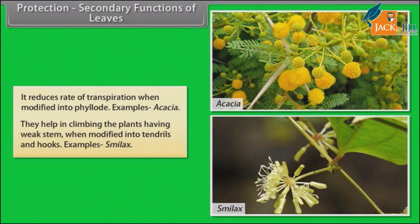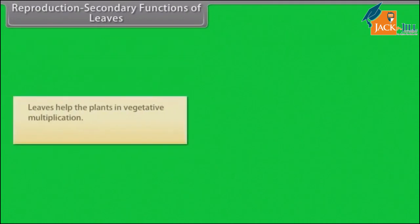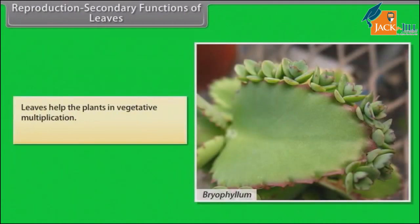Example of tendrils and hooks: Smilax. Reproduction: leaves help the plants in vegetative multiplication. Example: Bryophyllum.